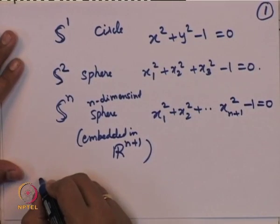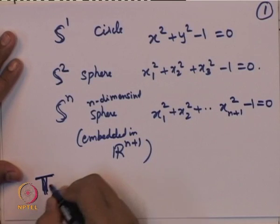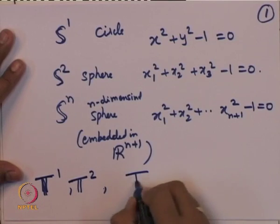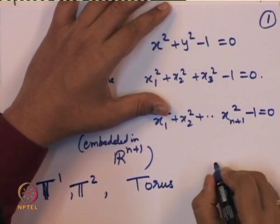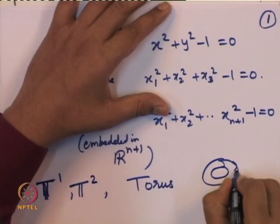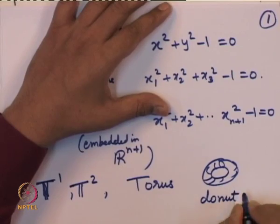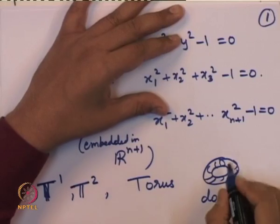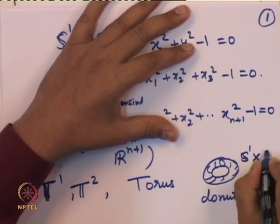Another important object is the so-called torus — T1, T2, and so on. These are called tori. The torus can be thought of as a donut. T1, T2, Tn are more generalizations, but in the basic case the torus turns out to be S1 × S1.